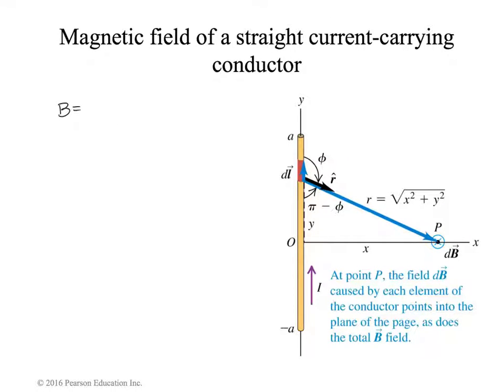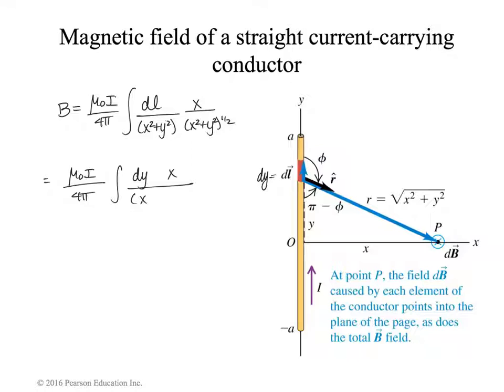Let's do that. So we get B equals μ₀I over 4π, dℓ over x² plus y², and then x times (x² plus y²)^(1/2), which is the same as the square root. And the last thing that I might notice is that this dℓ can also be written as dy because it's a piece taken along the y axis. So μ₀I over 4π, dy times x, and now we can combine the denominator (x² plus y²)^(3/2).